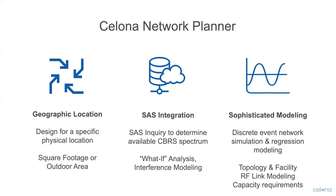Interference modeling for private LTE frequency reuse is also included. The Salona CBRS network planner features sophisticated modeling based on discrete event network simulation and regression modeling, taking into account facility and topology requirements including attenuation values and RF path loss characteristics, as well as RF link modeling and capacity requirements based on client devices spread throughout the coverage area.